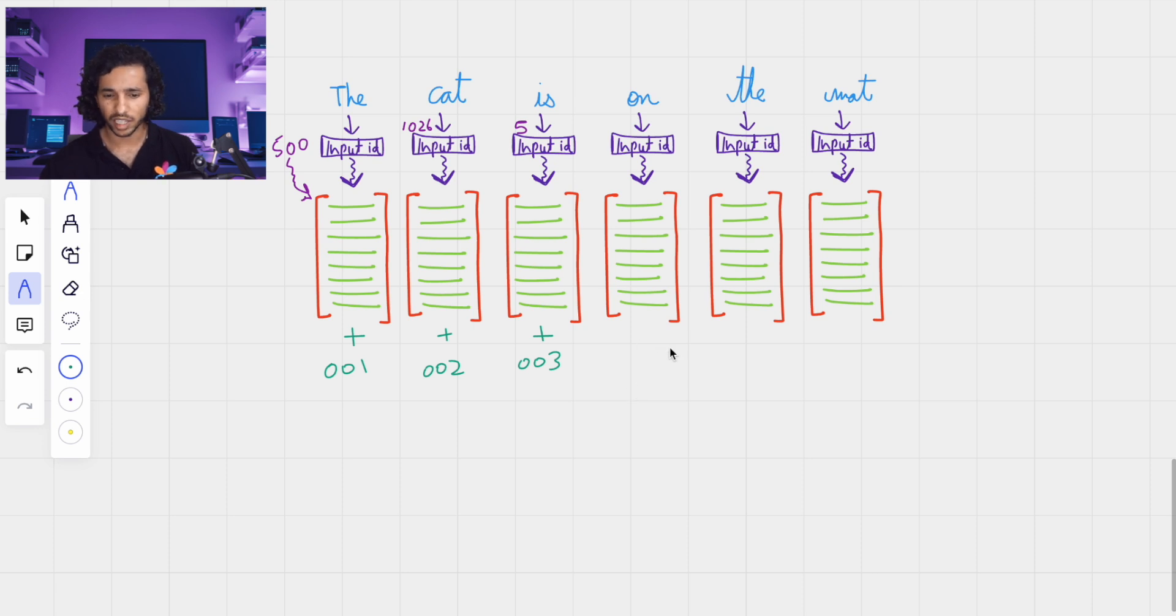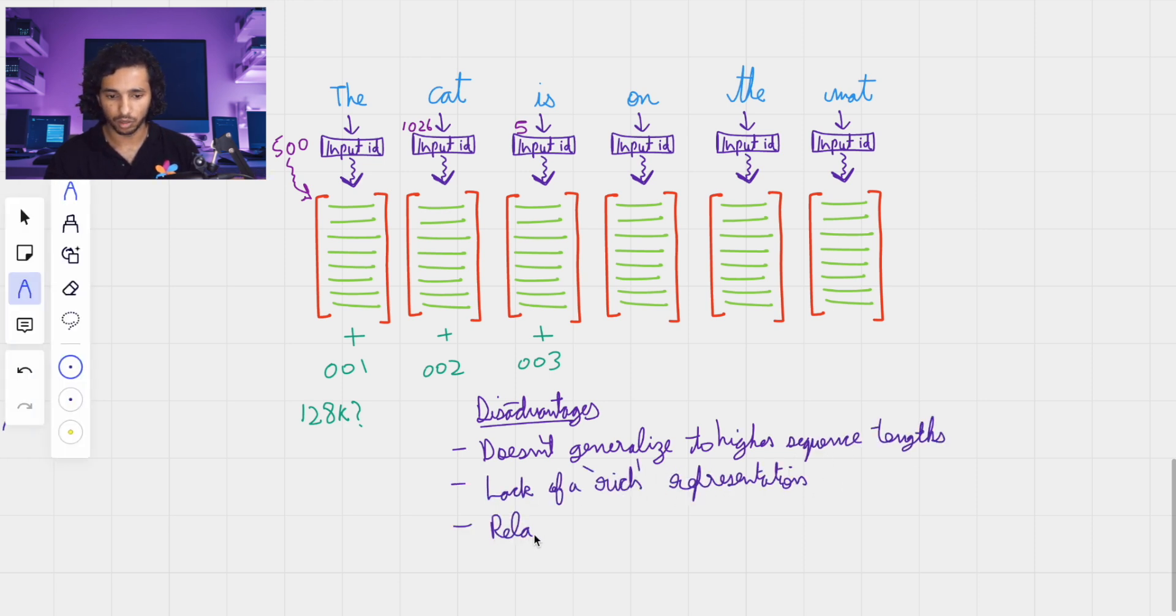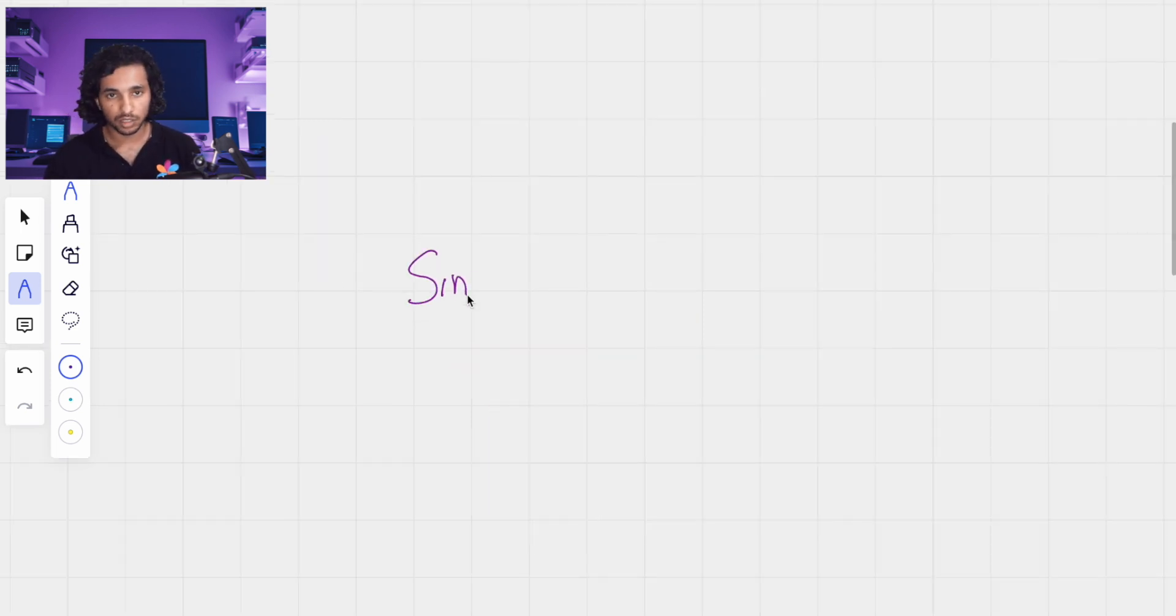One is that it cannot extend to let's say something like 128k tokens. That would be very difficult to add some kind of a value like that. Additionally, it is quite difficult to understand how far one word is from the other. Let's say how far cat is from the mat or if you go further down and you say like it is something and then how far it is from cat etc. That kind of information is quite difficult to frame just by adding some kind of a number here. In the original attention is all you need paper, they use a certain kind of encoding called sinusoidal encoding. Let us go into depth about this.